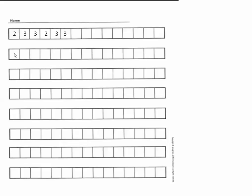Let's go to the next one. We can write A, B, C, A, B, C, A, B, C, A, B, C. Here we can draw, for example, star, star, circle, star, circle, and we will continue in the same pattern: star, circle, star, circle, star, circle. You will do the same in the rest of the page.